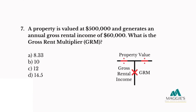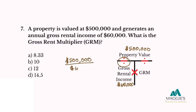Question seven: A property is valued at $500,000 and generates an annual gross rental income of $60,000. What is its gross rent multiplier? A. 8.33, B. 10, C. 12, D. 14.5. With property value of $500,000 on top and gross income of $60,000 in the left column, I divide: $500,000 divided by $60,000 equals 8.33. The answer is A.